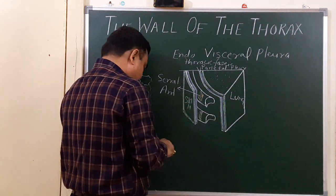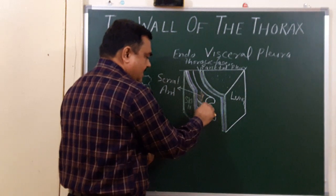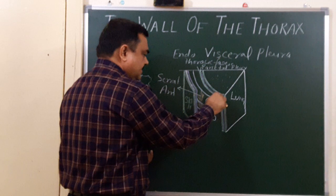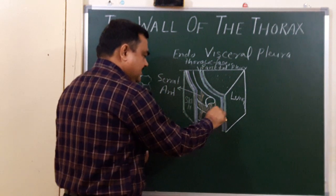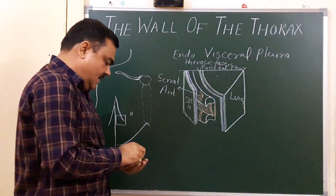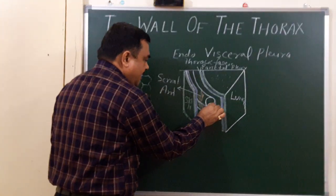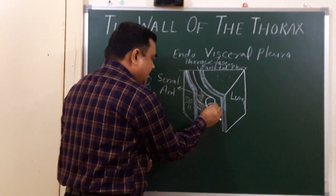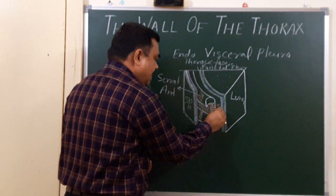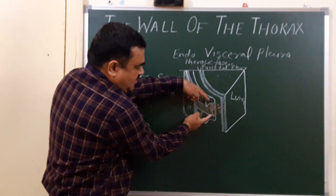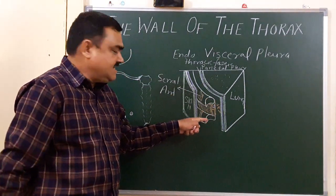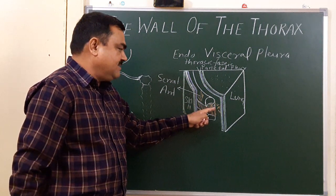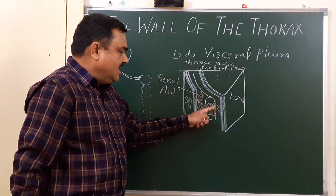Between these ribs there are muscles: external intercostal, internal intercostal, and transverse thoracic muscle. Between two adjacent ribs there is a space known as the intercostal space. This space is filled with the external intercostal muscle, internal intercostal muscle, and transverse thoracic muscle.